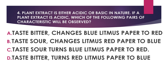Number four: Plant extract is either acidic or basic in nature. If a plant extract is acidic, which of the following pairs of characteristics will be observed? A) It tastes bitter, changes blue litmus paper to red. B) It tastes sour, changes red litmus paper to blue. C) It tastes sour, turns blue litmus paper to red. D) It tastes bitter, turns red litmus paper to blue.